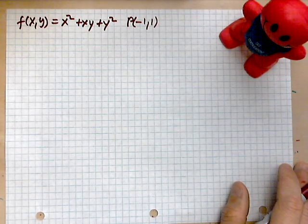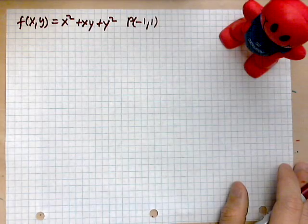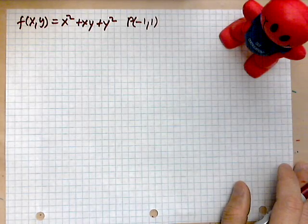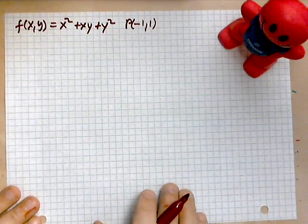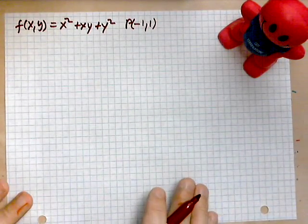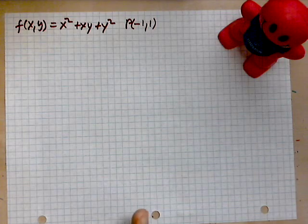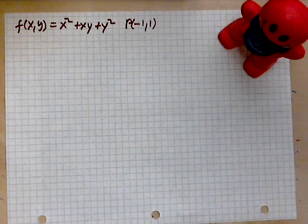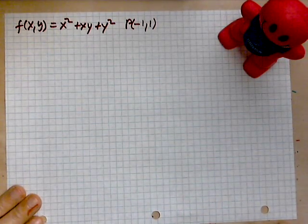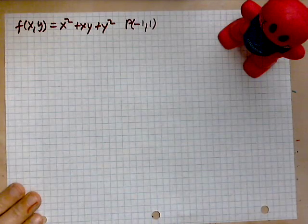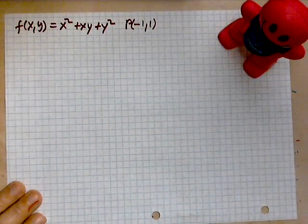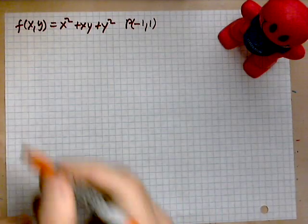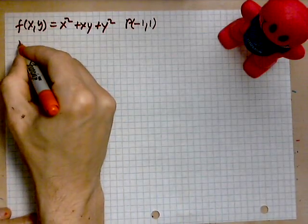We want just the direction, not the rate. The key step is to recognize that that direction is the gradient divided by its magnitude. Let's take a look at the procedure.